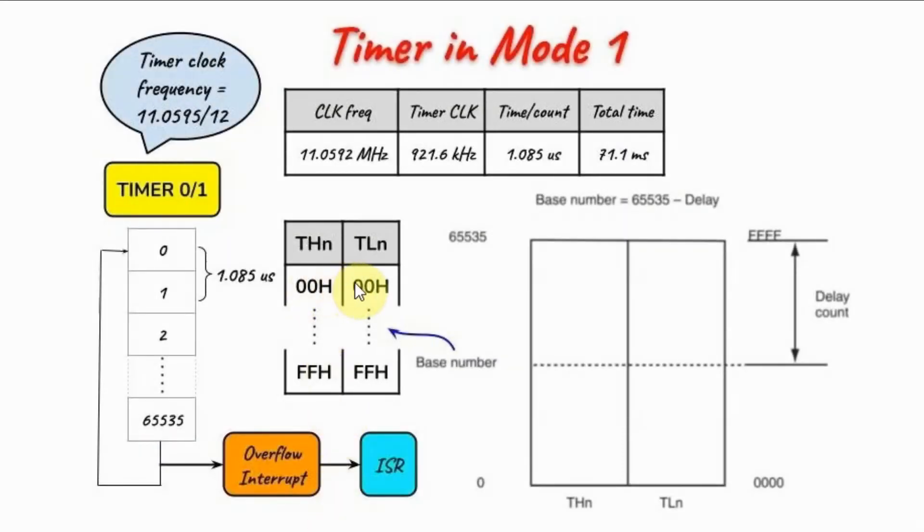The total time it takes to count from 0 all the way to the maximum count is 71.1 milliseconds. If we load the timer registers with initial value 0000, the timer will count from 0 all the way to the maximum and every 71.1 milliseconds overflow interrupt occurs. We can reduce the total time by introducing a delay in the count, which is then used to determine the base number that will be stored inside the timer registers. The next example will demonstrate this.